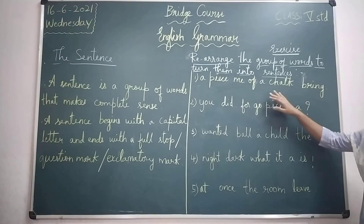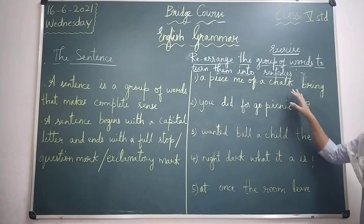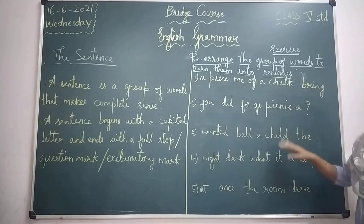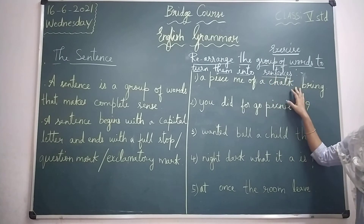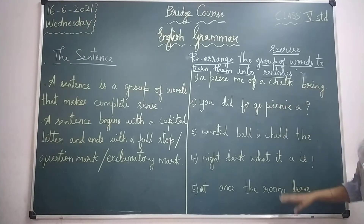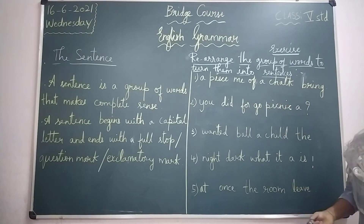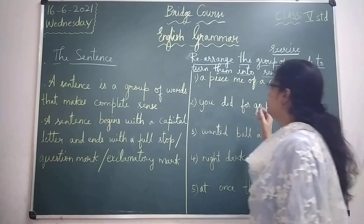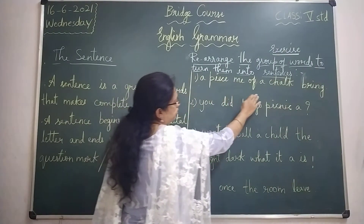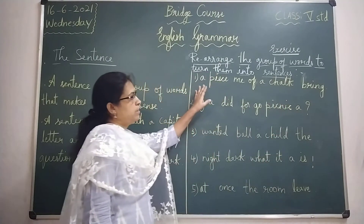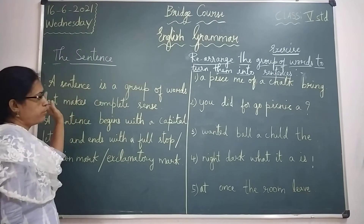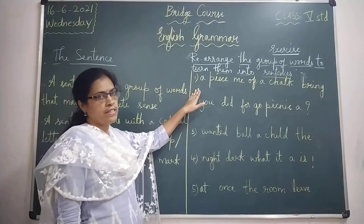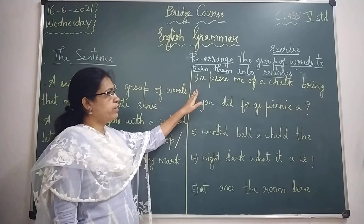So today let us do this exercise, children. I have written a few groups of words here, and none of these makes complete sense. What we have to do is rearrange the group of words to turn them into sentences. The first group of words is: 'a piece me of chalk bring' — this does not make sense, isn't it?